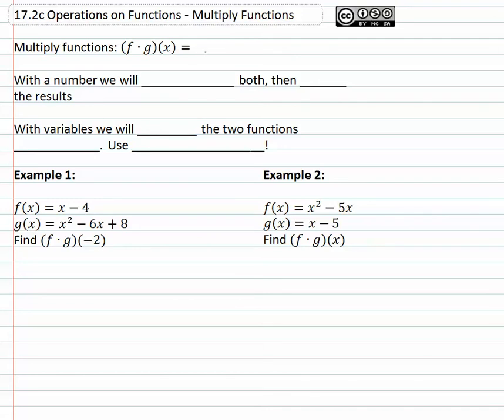Closed dot means we multiply the functions which simply means find out what f of x is and multiply by whatever g of x is.